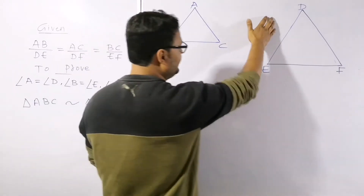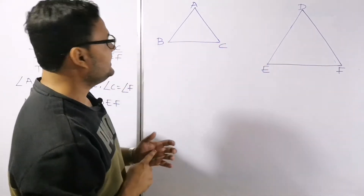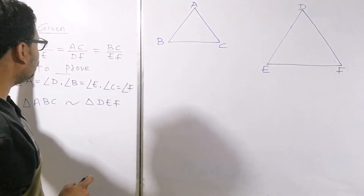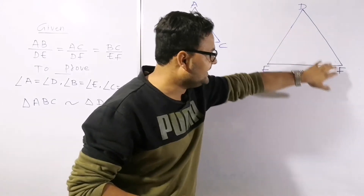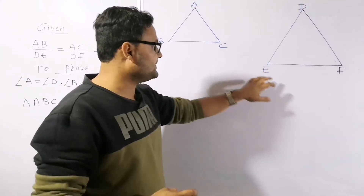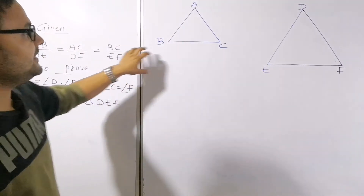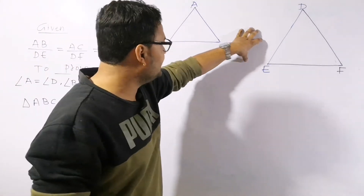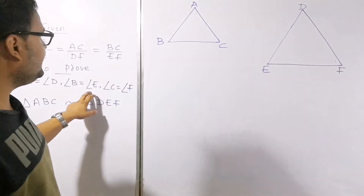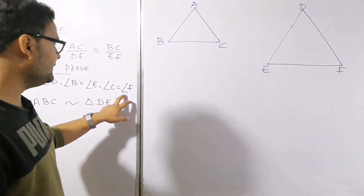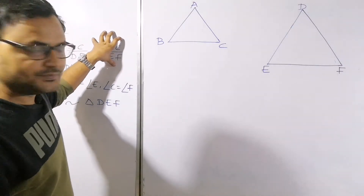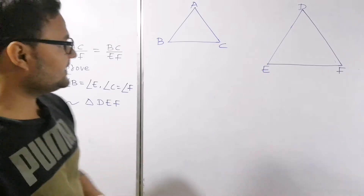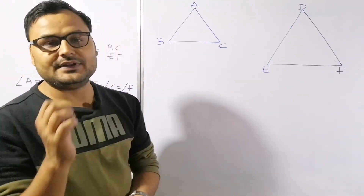We have triangle ABC and triangle DEF. The corresponding sides are: AB corresponds to DE, so AB/DE; AC corresponds to DF, so AC/DF; and BC corresponds to EF, so BC/EF. The corresponding sides are in the same ratio. We have to prove that the corresponding angles are equal: ∠A = ∠D, ∠B = ∠E, and ∠C = ∠F. When the corresponding sides are in the same proportion and the corresponding angles are equal, we prove the triangles are similar.